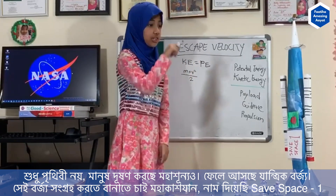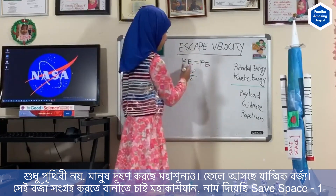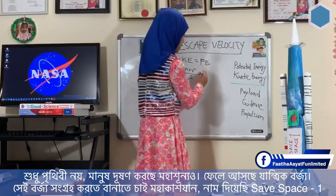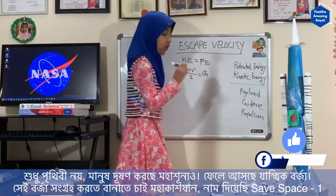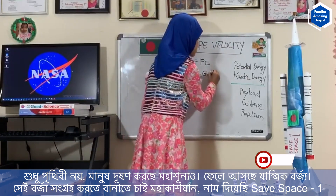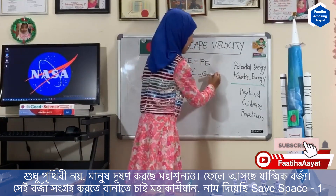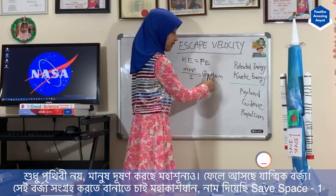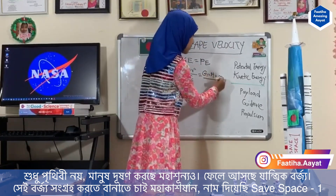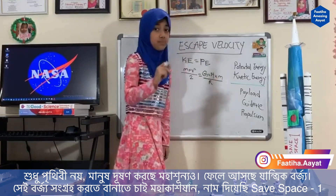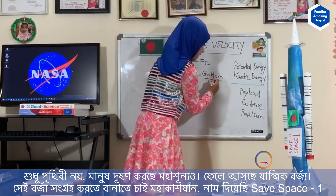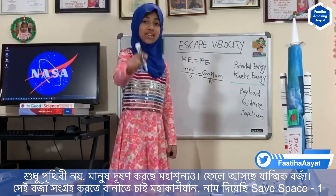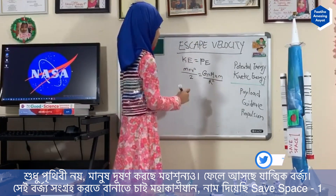My potential energy is gravity times the mass of the Earth times the mass of the rocket, divided by the radius from the center of the Earth. This is my energy and I need your help to solve this problem.